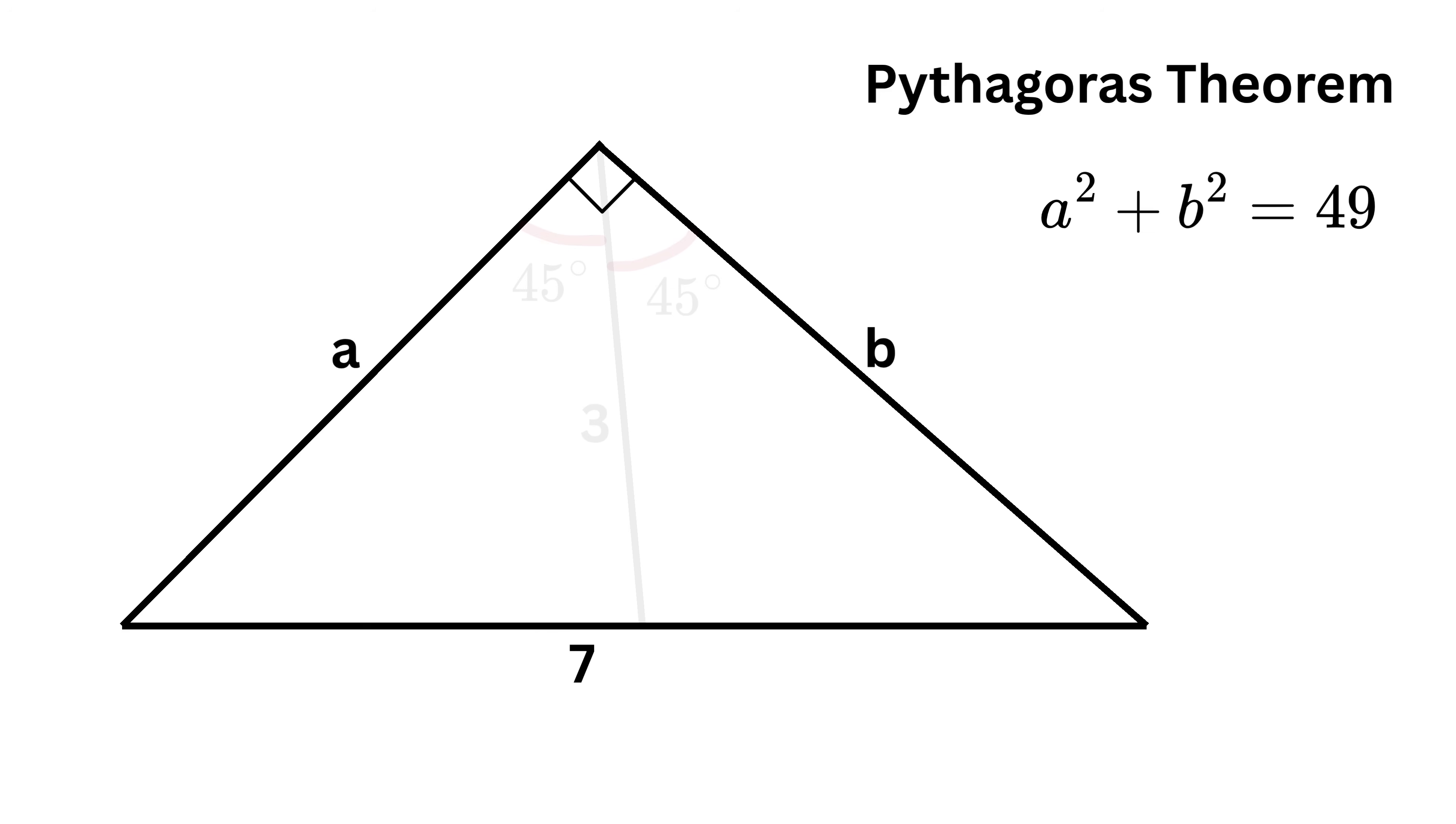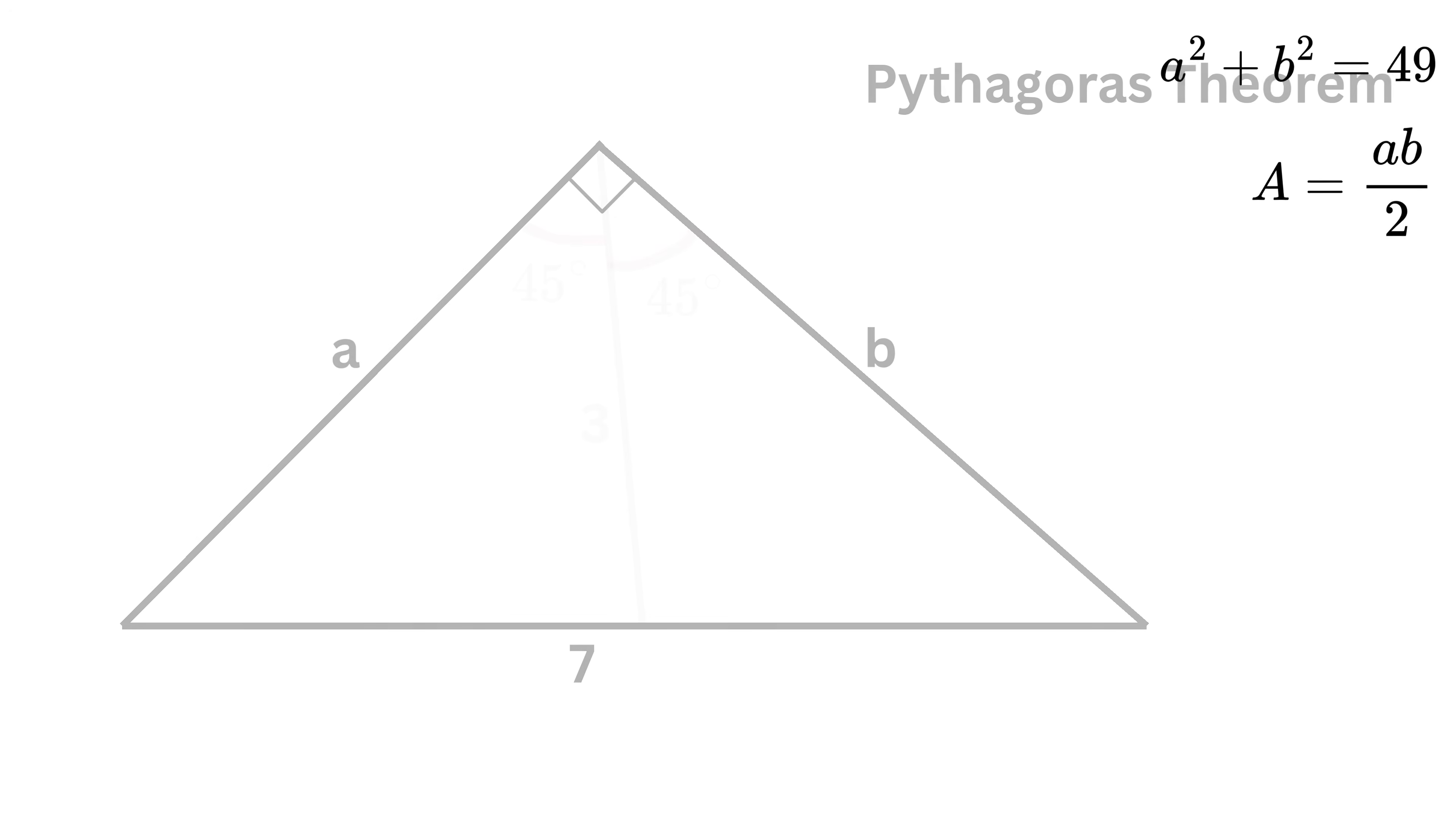Now what will be the area of this right triangle? It will be equal to half times the product of the length of its legs. This means its area will be half times AB. Keep both of them aside for a while.